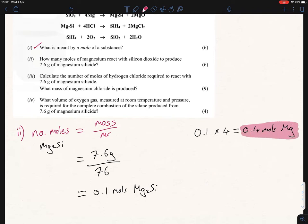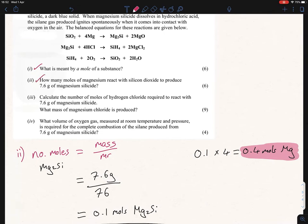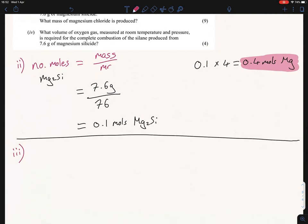Part iii is asking us to calculate the number of moles of hydrogen chloride, so that's the hydrogen chloride here, required to react with 7.6 grams of magnesium silicide. Again, if we use number of moles equals mass over MR, we don't have the mass of HCl, but why can't we just apply the ratio again? So we know the number of moles for magnesium silicide being 0.1, and we can see there are four times as many for HCl. So it's very similar again. It's simply going to be 0.1 times 4 equals 0.4 moles of your HCl, the hydrogen chloride. We'll highlight that.